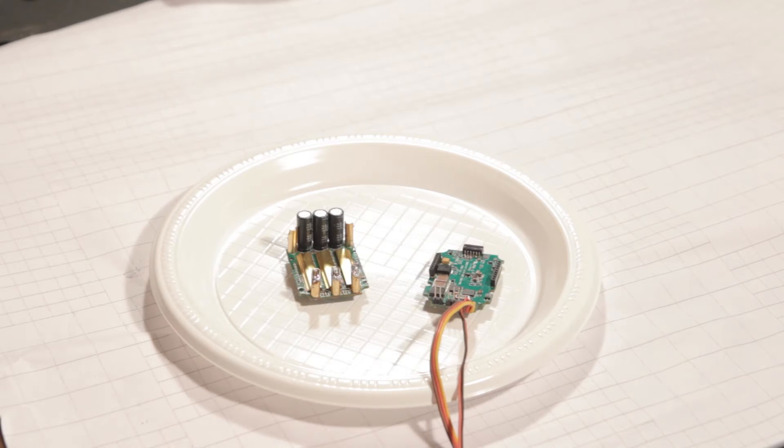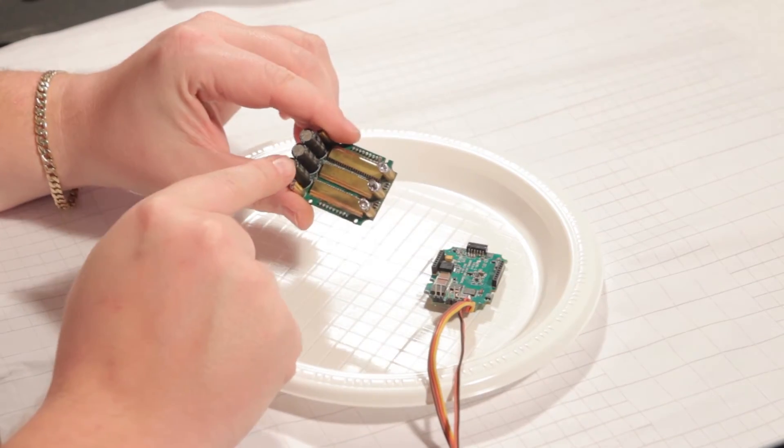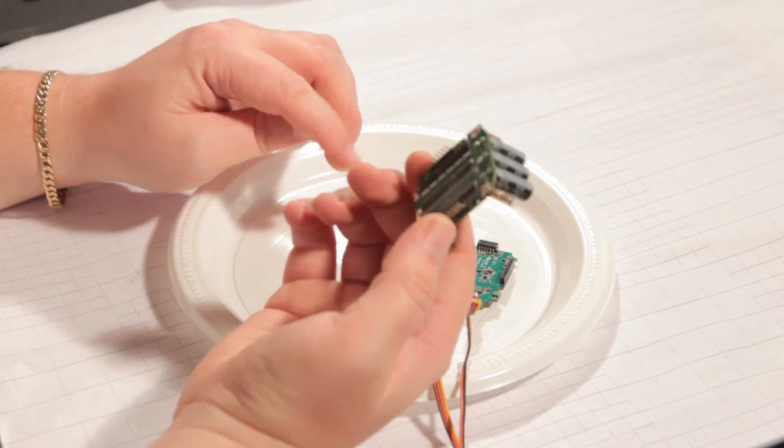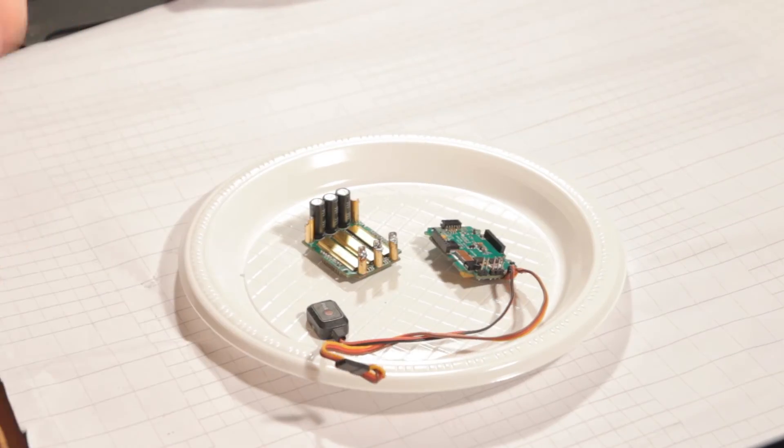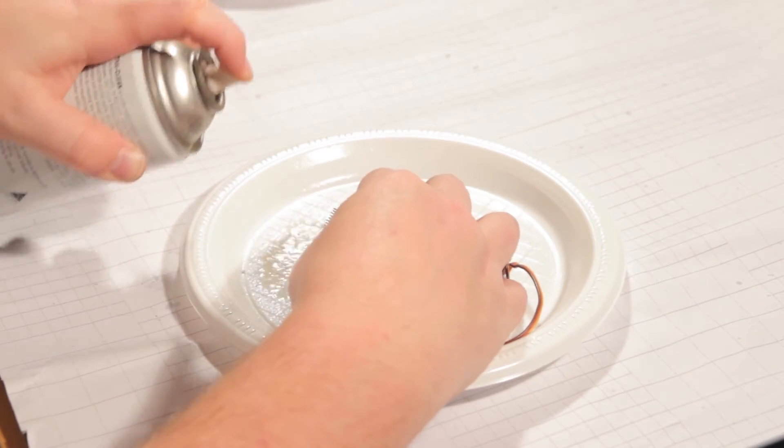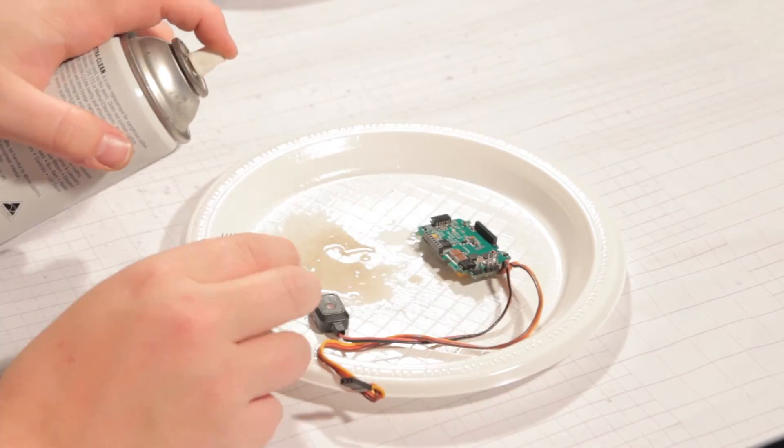There you go. All separated, now ready to be washed down with some electric clean. You'll see how dirty the electric clean gets on that plate. Again, don't use a plastic plate like that because it will melt. Just heads up. You just start seeing the runoff of the electric clean. Look at the color already. It's already pretty nasty.